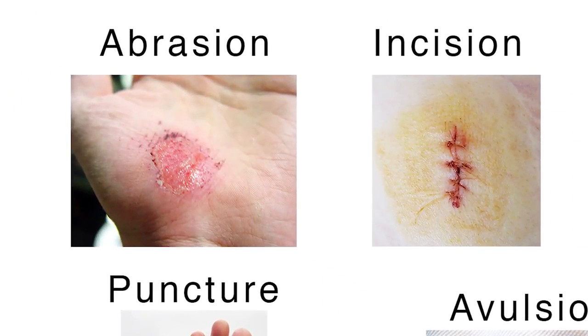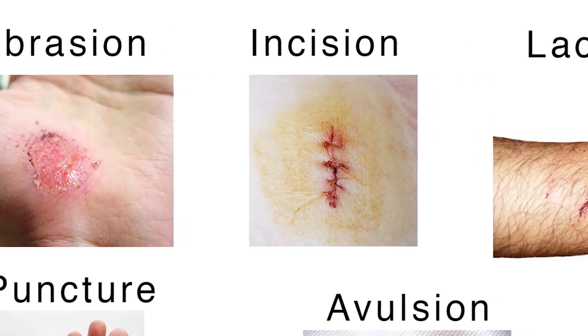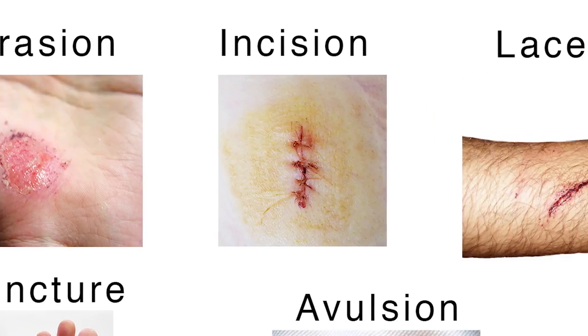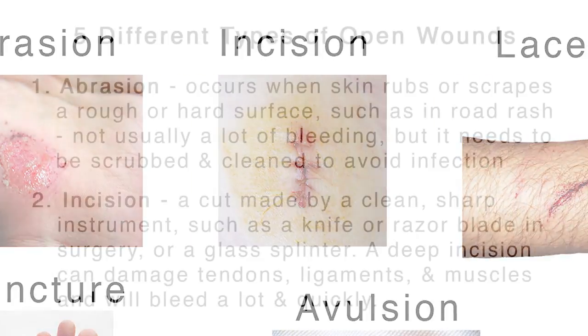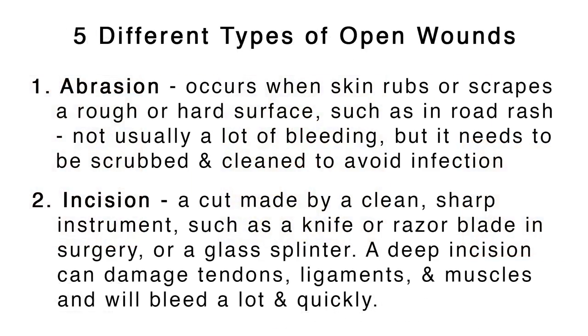Second, an incision is a cut made by a clean sharp instrument such as a knife or razor blade in surgery or a glass splinter. A deep incision can damage tendons, ligaments, and muscles and will bleed a lot and quickly.